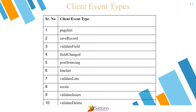ValidateField: The ValidateField event occurs whenever a field is about to be changed by the user or by a client-side call. This function is automatically passed up to three arguments by the system: Type, Name, and LineNum. FieldChange: The FieldChange client event occurs whenever a field is changed by the user or by a client-side call, and is also passed up to three arguments. PostSourcing: This client event occurs after a field is changed and after all child field values are sourced from the server. It enables FieldChange-style functionality to occur after all dependent field values have been set, and is automatically passed up to two arguments: Type and Name.